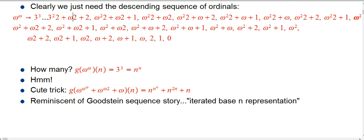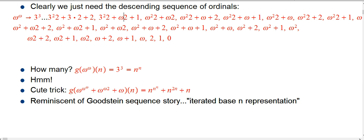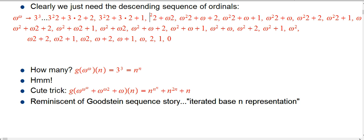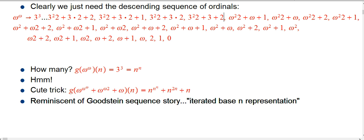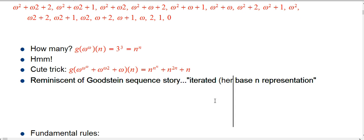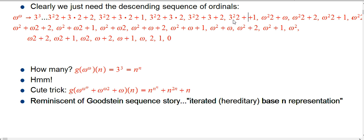If you change all of these omegas to 3, what you see is that you're actually just looking at exactly all the numbers in descending sequence from 3 to the 3 downward, written in hereditary base 3. It's really just ternary notation because we haven't really done iterated exponents here yet.